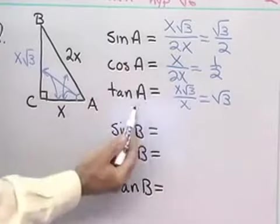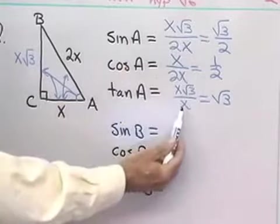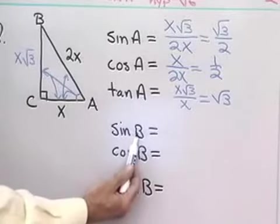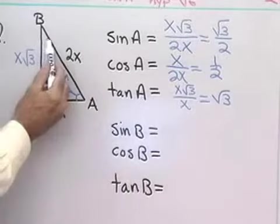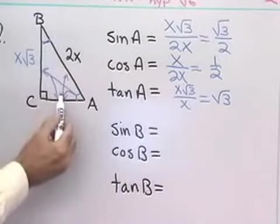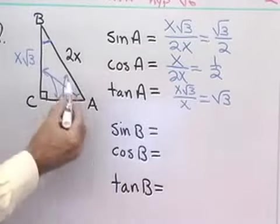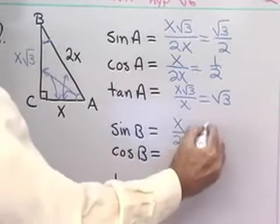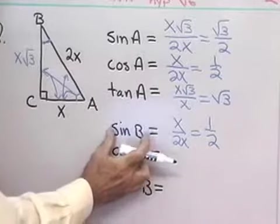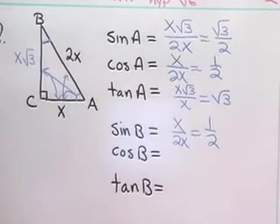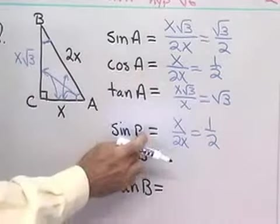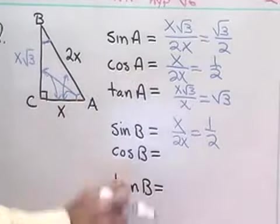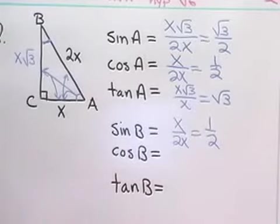Now let's go to angle B, because it's also an acute angle, and find the sine of B. The sine of angle B is the side opposite B divided by the hypotenuse: x divided by 2x, which equals 1 half. I notice that the sine of B is the same as the cosine of A, and that's because A and B are complementary angles — they add up to 90 degrees. That's the cofunction theorem: the sine of an angle is the cosine of its complement.